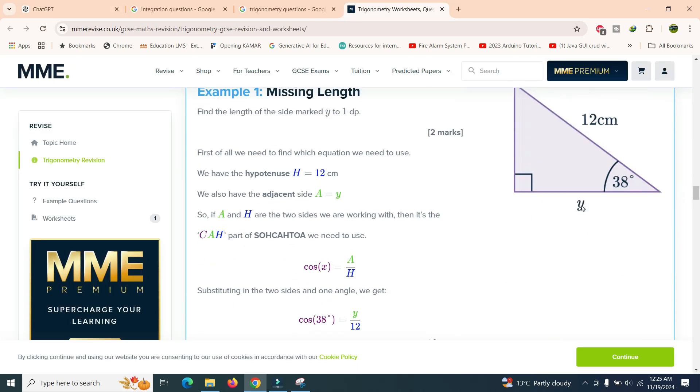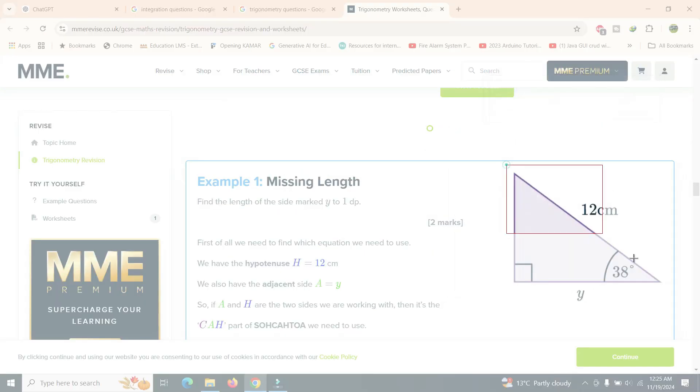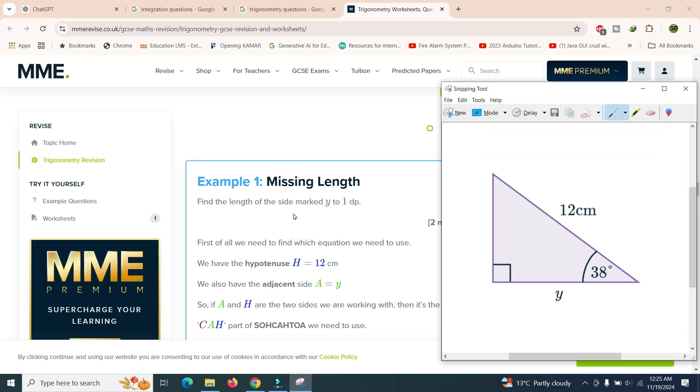For example, we try to solve this. So right-click, new, capture the question: find the length of side mark by 1 to 1 DP.